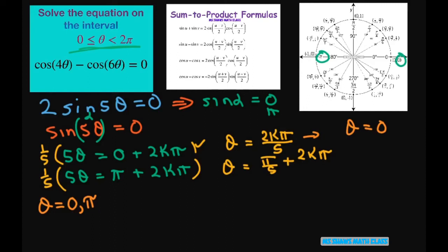Now this one if k is 0, we get θ equals π divided by 5. Now if we let k equal 1, we're still going to get π divided by 5. So basically let's just start here. Oh, this should be over 5.